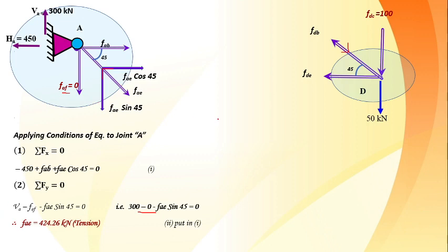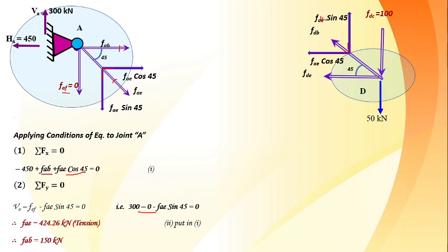All values from joints A and D are transferred back to the original truss figure. With forces shown in red indicating found quantities, we check what remains unknown. Only FBE (or FEB, which are equal, opposite, and collinear) remains. We can now proceed with joint B or joint E.